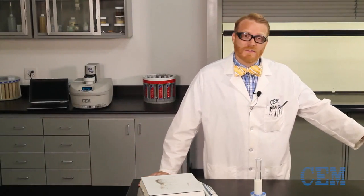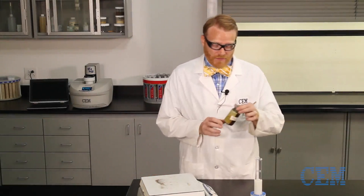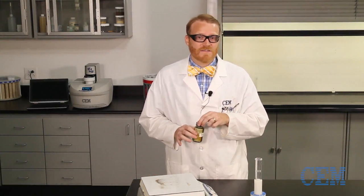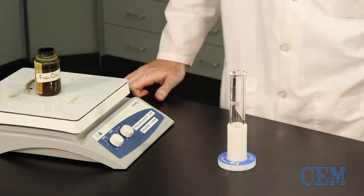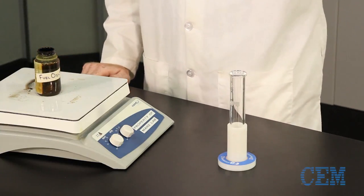I just happen to have some Bunker Oil right here. Bunker Oil is also known as Fuel Oil number 6 and it's very viscous. So what I like to do is put it on the hot plate before I pipette it to make it a little less viscous.